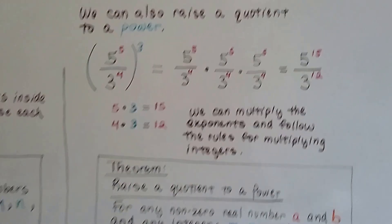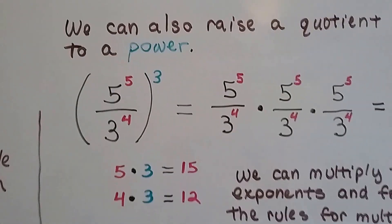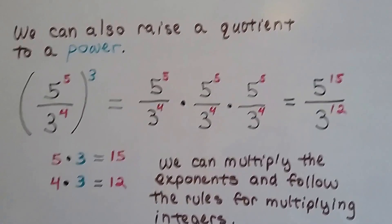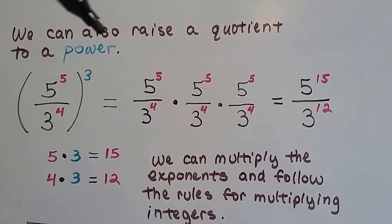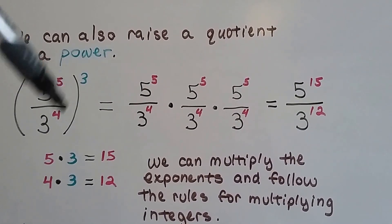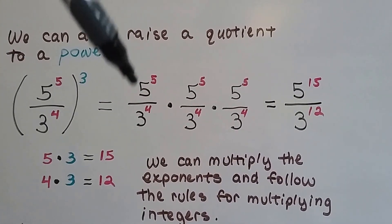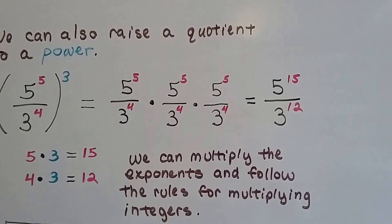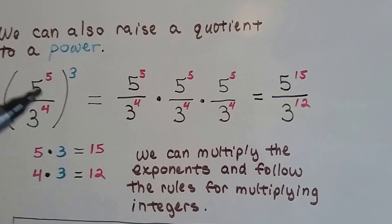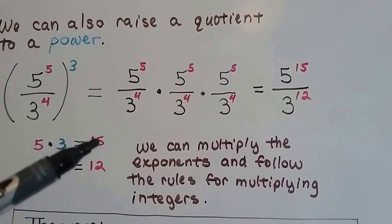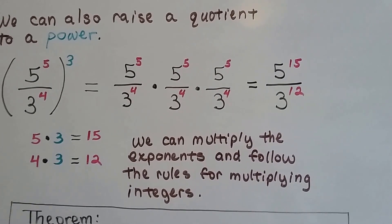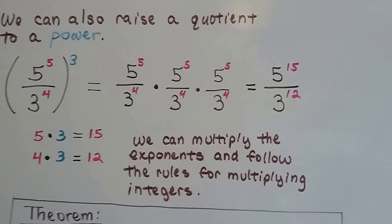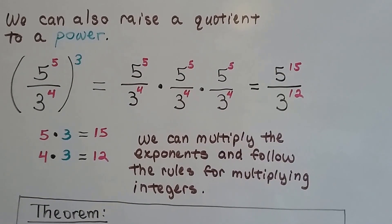We can also raise a quotient to a power. This 3 would get multiplied to the 5, and it would also get multiplied to the 4. Basically what this is saying is we've got this as the base, and we get it 3 times. And when you're multiplying them together, you add the exponents. If we kept it like this, we could just do 5 times 3, which is 15, and the 4 times 3, which is 12, and we get 5 to the 15th divided by 3 to the 12th. So we can multiply the exponents and follow the rules for multiplying integers, whether they're negative or positive.